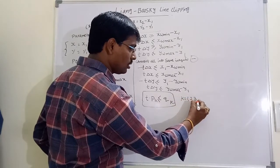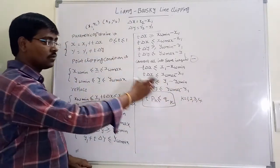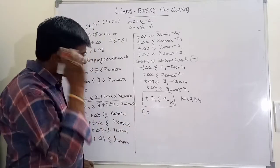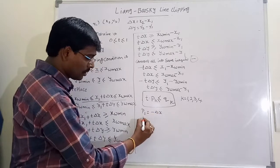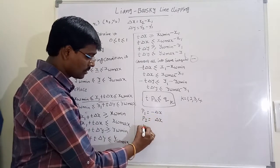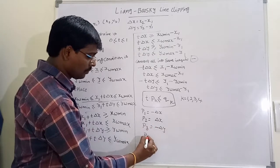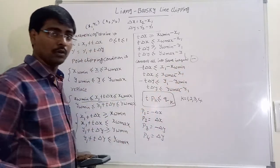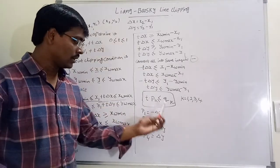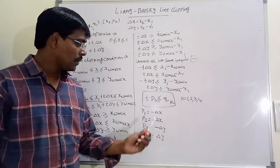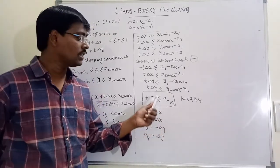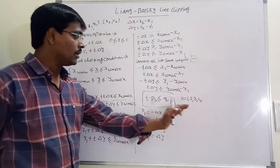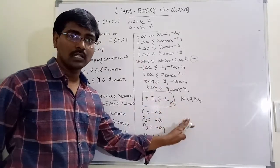After calculating pk and qk values, we check whether the line is inside, outside, or partially inside the window. The algorithm steps are: first, get the line endpoints x1, y1, x2, y2. Then calculate p1, p2, p3, p4 and q1, q2, q3, q4. Also set t1 = 0 for the first point and t2 = 1 for the last point.